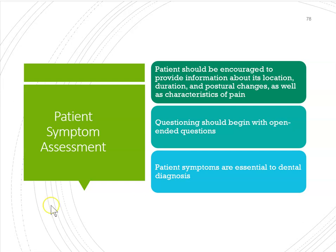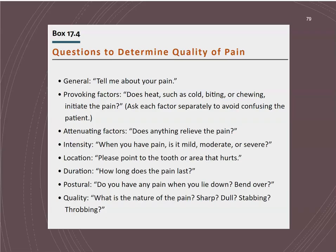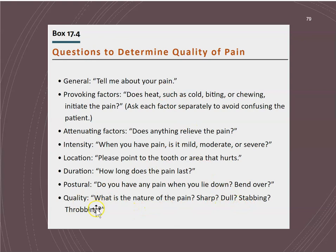If your client is in pain, remember we talked about open-ended questions. Try to ask as many open-ended questions as possible. 'Tell me about your pain' is good instead of 'Do you have pain?' You want to ask them how intense it is — mild, moderate, severe — get them to rank it on a scale of 1 to 10. Get them to point to it, tell you how long it lasts, when it happens, and what the quality of the pain is — sharp, dull, stabbing, or throbbing — so you can relay that information to the dentist.